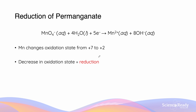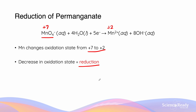Here is our final example of the reduction of permanganate. Manganese initially has an oxidation state of +7. Afterwards, it has an oxidation state of +2, and because it has decreased, it means that it must have undergone reduction.